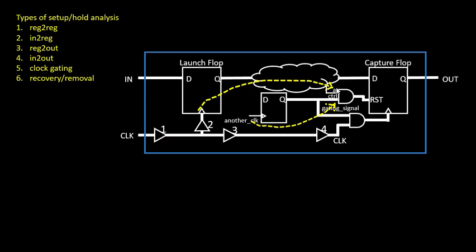This kind of check is between data signals — the A pulse is a data pulse and the control signal is also a data signal. A check between two data signals is referred to as a data-to-data check, and these are included as part of setup and hold analysis. It's categorized separately because, unlike other checks that are dependent on flops, in this case the endpoint is not a flop but an input of the gate. As we go deeper into the course, I will provide more examples of data-to-data checks.